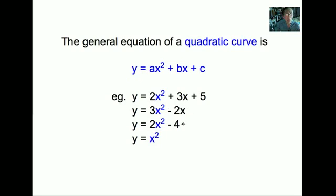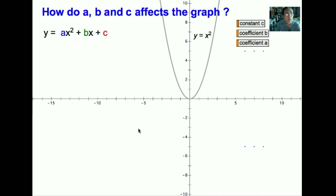The third curve cuts the Y-axis at negative 4, and the last curve cuts at the origin. This is the most basic curve, Y equals X squared. Now we will take a look at how A, B, and C affects the graph.